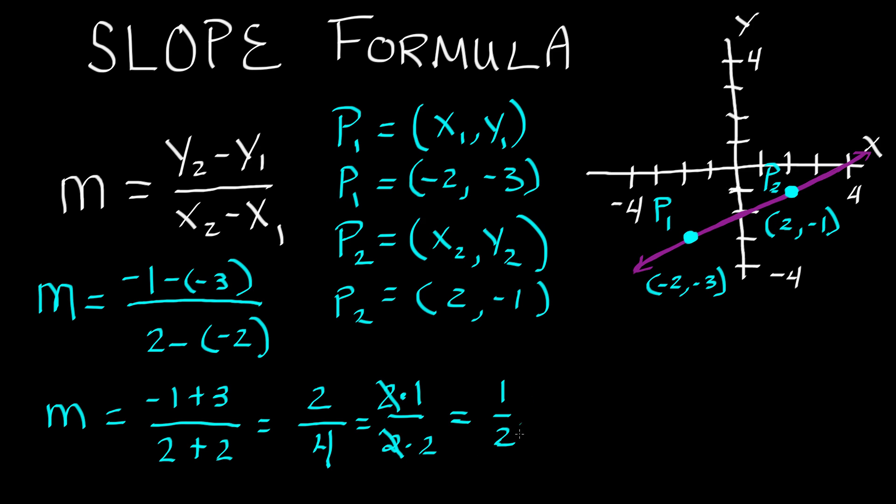So we were basically able to get this 1 half by using these 2 points that were on this line and plugging them into the slope formula. And that told us that a line that contains those 2 points has a slope of 1 half. So 1 half is the slope of that line that I have drawn up there.